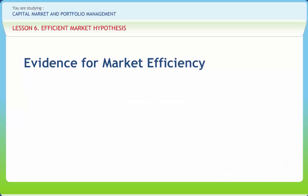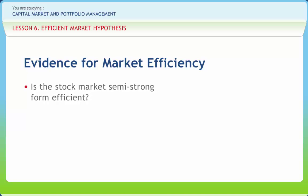A simple test for strong form efficiency is based upon price changes close to an event. The first evidence is whether the stock market is semi-strong form efficient. The most obvious indication that the market is not always and everywhere semi-strong form efficient is that money managers frequently use public information to take positions in stock. The assumption of semi-strong form efficiency is a good first approximation for a market with as many sharp traders and with as much publicly available information as the U.S. equity market.